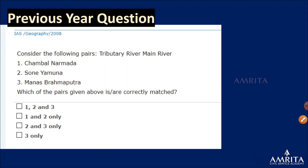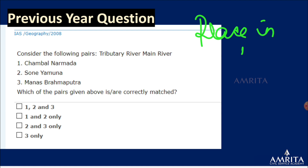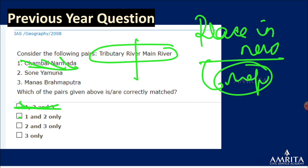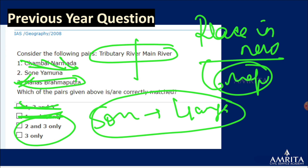In the tributary question: Chambal is not a tributary of Narmada — that's wrong. Manas is a tributary of the Brahmaputra. Son is a tributary of the Ganga, not the Yamuna. These facts help solve previous year questions. The places-in-news maps for rivers are expected to be covered in static preparation, but current affairs topics are the prime focus.